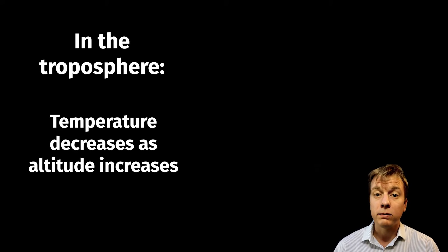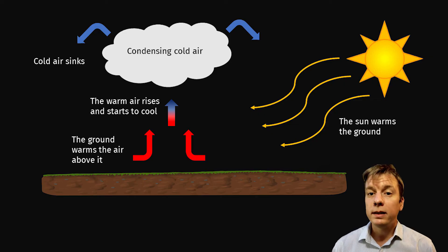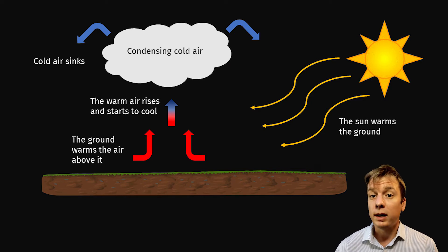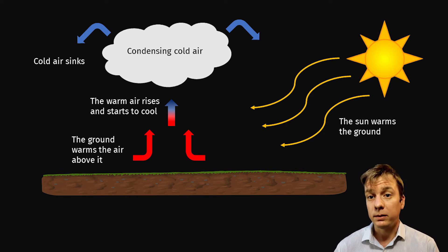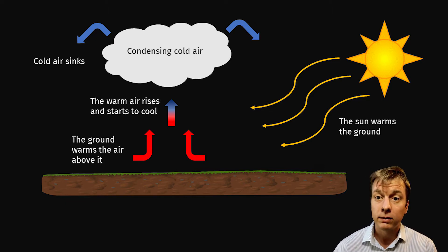Solar radiation in the form of heat warms the surface of the planet. The warm ground then heats the air above it. Warm air is less dense than cool air and therefore rises, bringing with it water molecules. As the warm air rises, it cools and the water condenses into clouds.